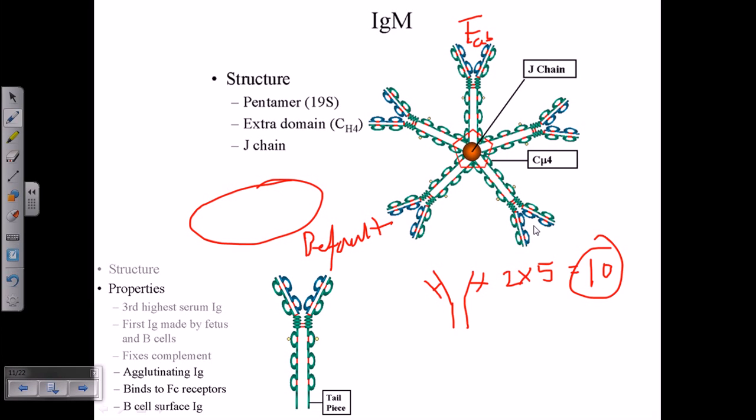This high valency of ten means IgM can bind many antigens and fix complement very well. The most important part of complement fixation is forming an antigen-antibody complex, which IgM achieves most quickly because of its high valency.